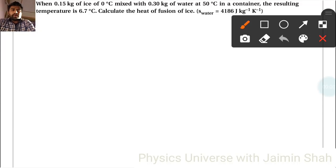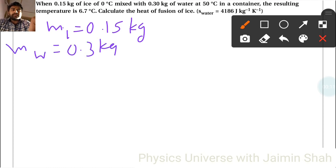The question is: when 0.15 kilograms of ice at 0 degrees Celsius is mixed with 0.30 kilograms of water at 50 degrees Celsius in a container, the resulting temperature is 6.7 degrees Celsius. Calculate the heat of fusion, Lf. First, the mass of ice mi equals 0.15 kilograms and mass of water is 0.3 kilograms.